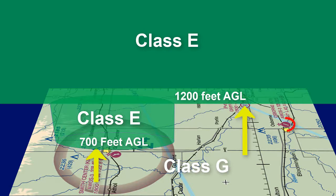Since Osborne Airport does not have any border around it, Class G starts at the surface and rises to 1,200 feet AGL, where once again Class E then starts.